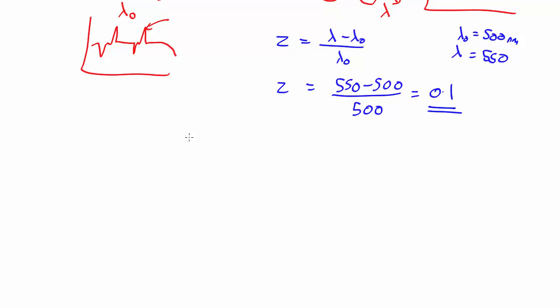So any distance back then is going to be the distance now all over 1 plus the redshift. So that's telling us space is getting bigger. If you find something with a redshift of 0.5, that means the universe was 1.5 times smaller when it was emitted, and so on.